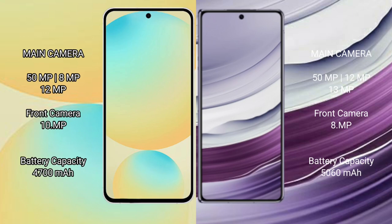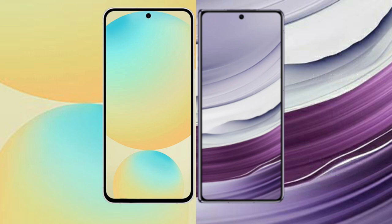Samsung Galaxy S24 FE has a triple camera setup: 50MP plus 8MP plus 12MP, with a 10MP front camera. Wahabamate X5 has a triple camera setup: 50MP plus 12MP plus 13MP, with a 8MP front camera. Samsung Galaxy S24 FE has a 4700mAh battery with 25W fast charging, while Wahabamate X5 has a 5060mAh battery with 66W fast charging support.